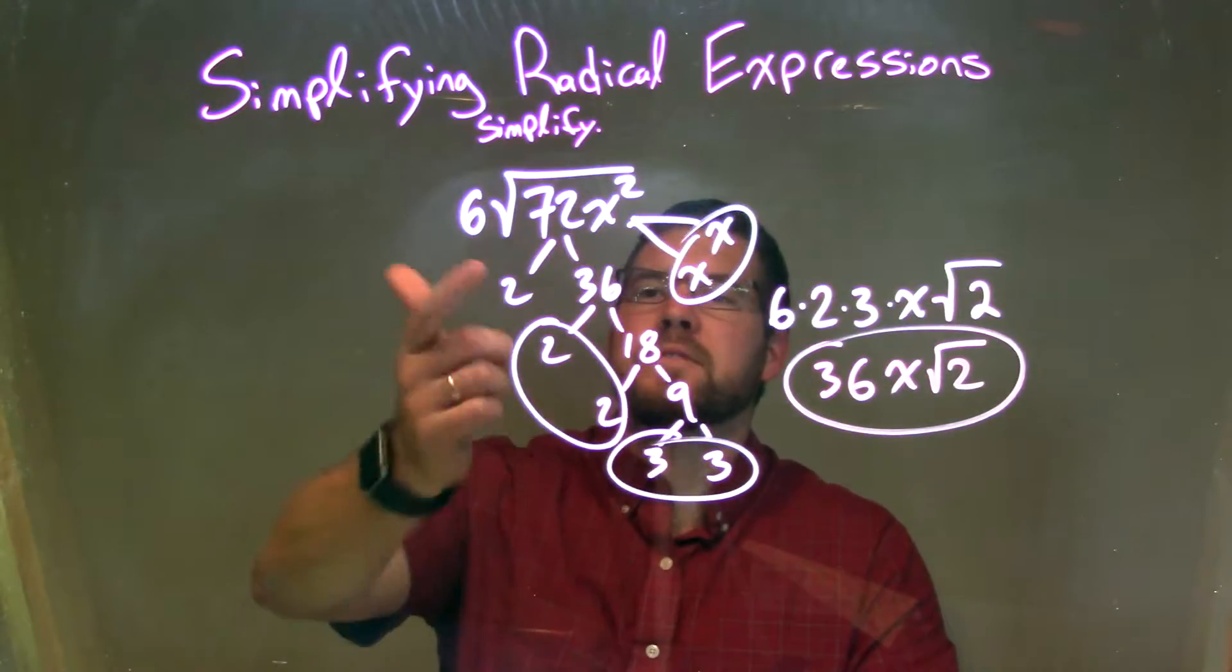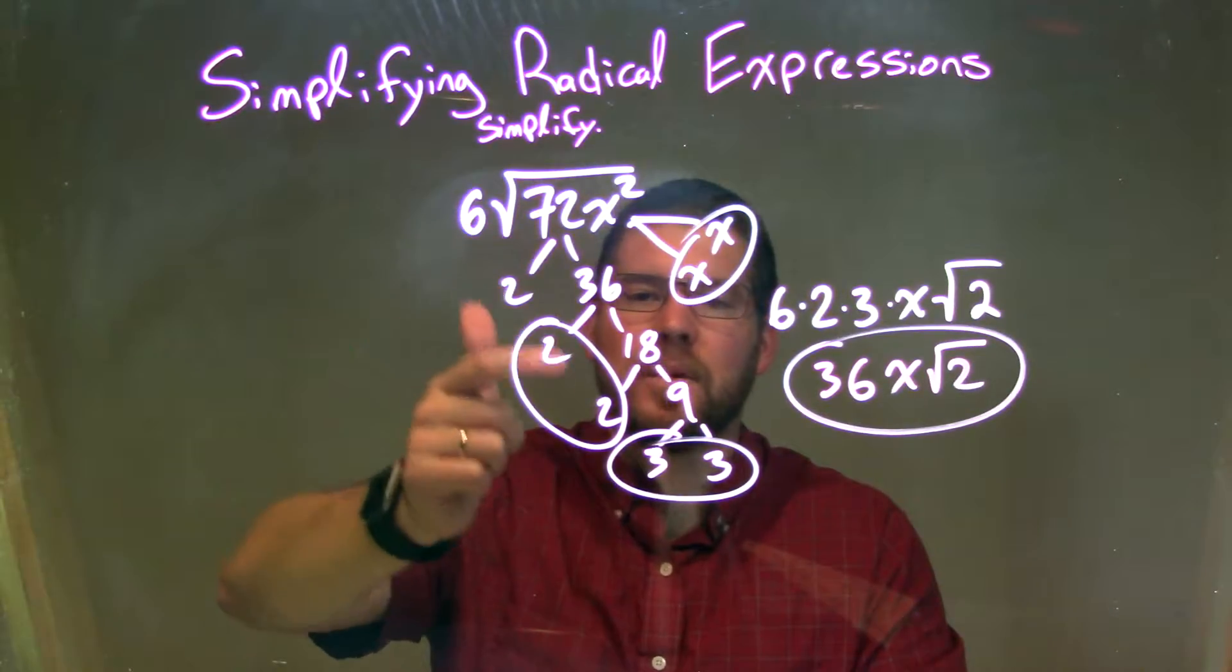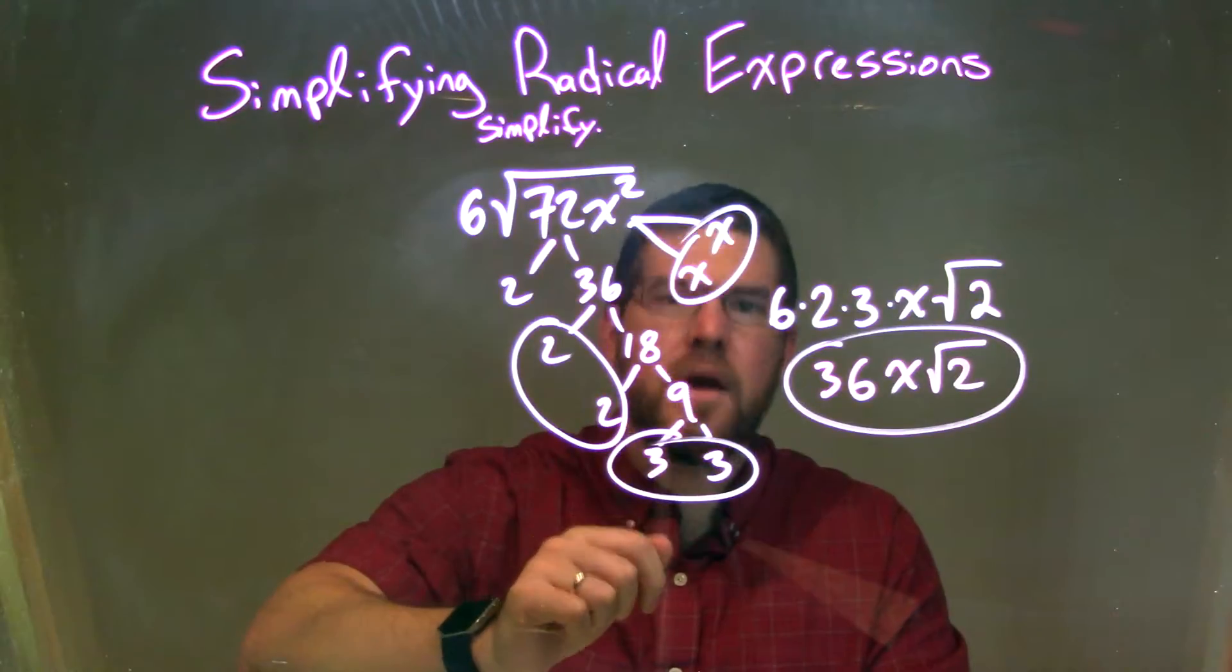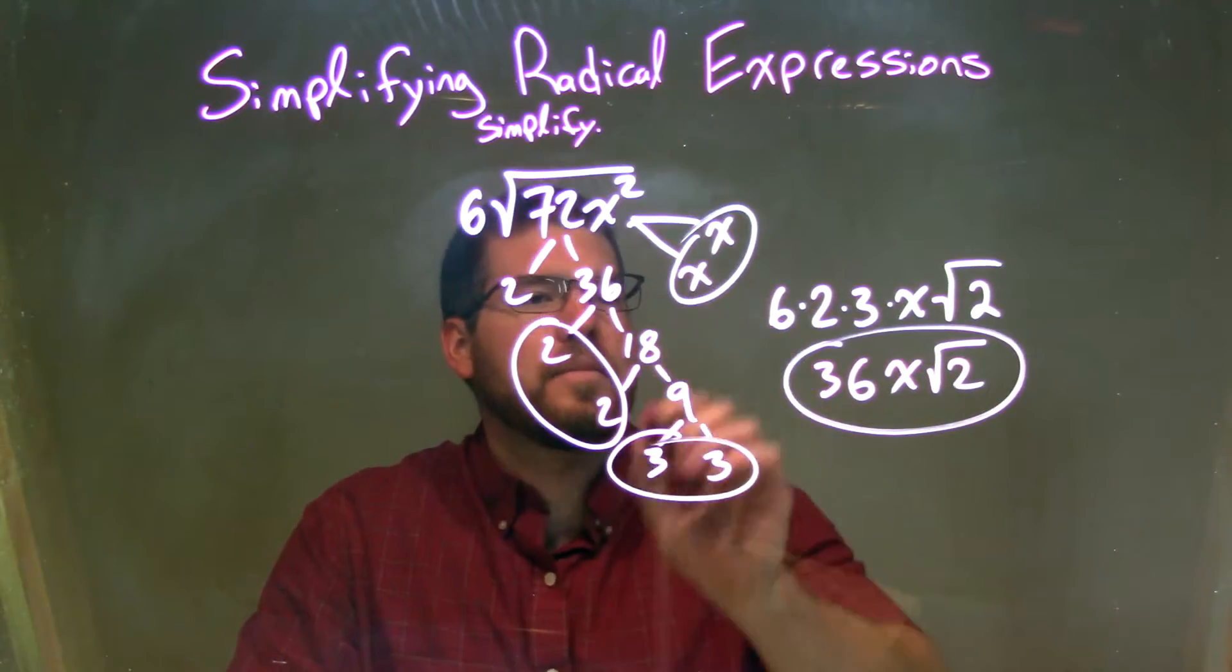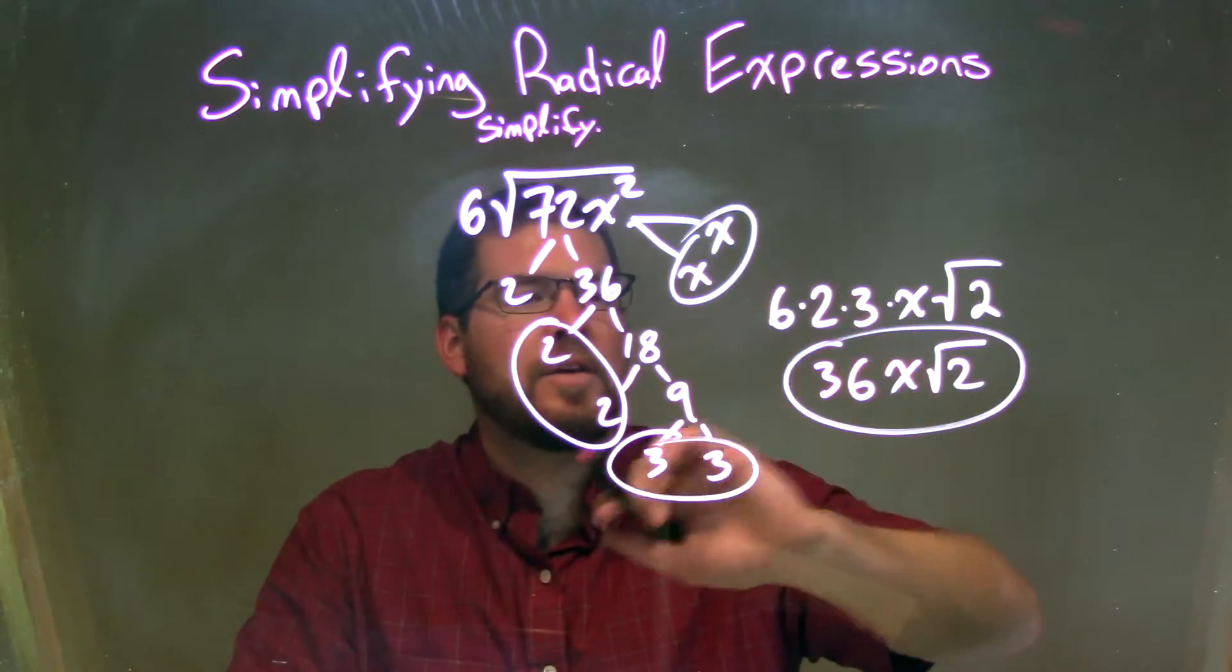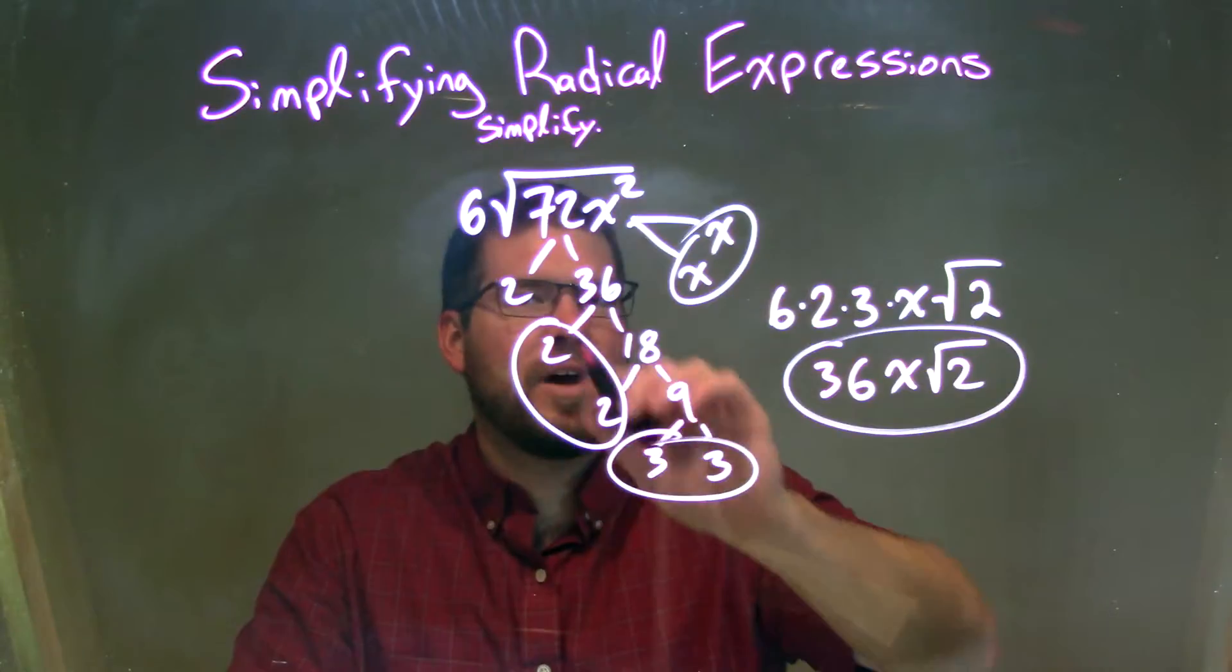So let's recap. We're given 6 times the square root of 72x squared. The prime factorization of 72 is 2 times 2 times 2 times 3 times 3, and x squared is x times x. I circled my pairs, and when I circled my pairs, they're represented by a single number of that pair on the outside.